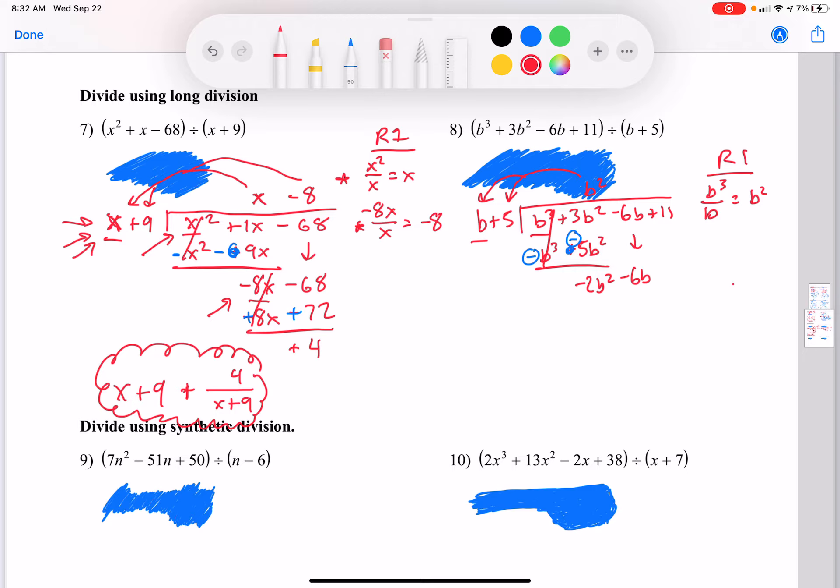So negative 2b squared over b is negative 2b. So negative 2b goes here. Do my rainbow multiplication. Negative 2b times b is negative 2b squared. Before you change the signs, these two things in front should match. These two things in front should be exactly the same before you change the sign, always. And then negative 2b times 5 is negative 10b. Now I can change the signs, so now they're opposites and they're going to cancel.